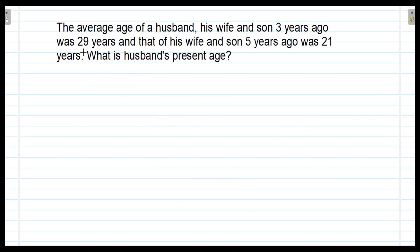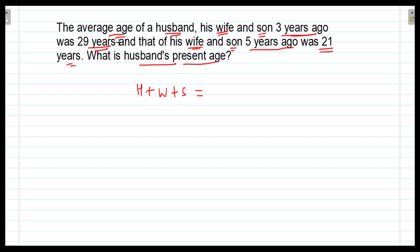Friends, the question is on the screen. The average age of a husband, his wife and son, three years ago was 29 years. And that of his wife and son, 5 years ago was 21 years. What is the husband's present age? In the first condition, the average age of husband, his wife and son 3 years ago was 29 years. So their total age was 29 multiplied by 3, which is 87 years.